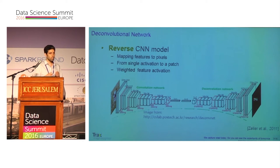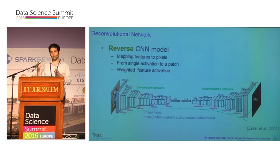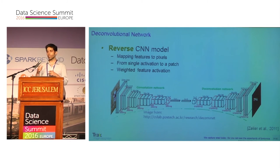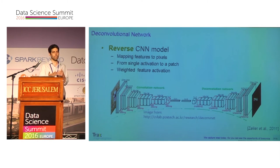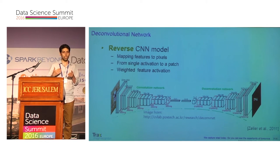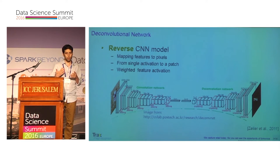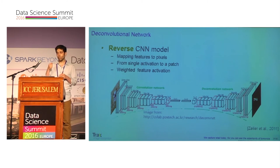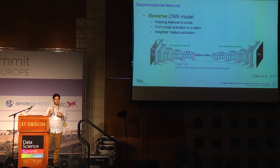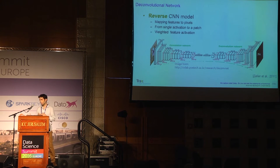For each neuron, we try to understand what patch from the input image it looked at, and inside this patch, which element contributed the most to the neuron activation. We do this by going in the reverse direction — instead of going from the input image to the neurons, we go from the neurons to the input image. We choose one neuron, probably the one with the strongest activation, and set the rest to zero, then go backward using deconvolution.